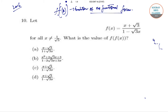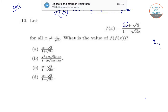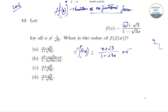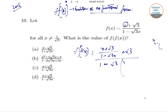Now we are going to solve this question. For f(f(x)), every place of x we need to put that function directly. So f(f(x)) is evaluated by substituting (x + root 3) / (1 − root 3·x) back into f, giving us (x + root 3)/(1 − root 3·x) + root 3 all over 1 − root 3 times (x + root 3)/(1 − root 3·x).